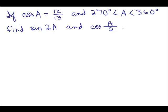All right, we're going to solve this problem. If cosine of A equals 12/13 and A is between 270 degrees and 360 degrees, find the sine of 2A and the cosine of A over 2. So we know the cosine of A is 12/13.